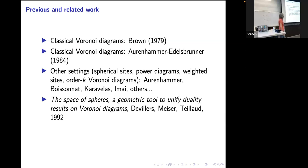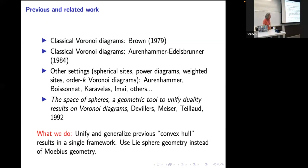Lots of generalized Voronoi diagrams reduce to convex hull problems. Going back to Delaunay, people thought about Voronoi diagrams in terms of spaces of spheres. The earliest clear reference applying the space of spheres in a sophisticated way to Voronoi diagrams is a 1992 paper. What we'll do today is unify all of these previous convex hull problems so they follow from one big theorem, and generalize so the theorem applies to other types of Voronoi diagrams as well — a single framework using Lie sphere geometry instead of Möbius geometry.